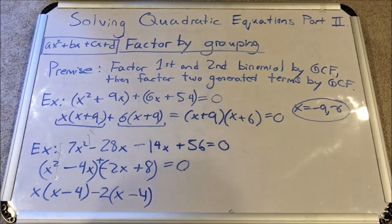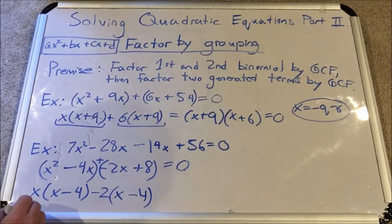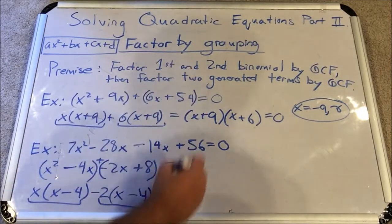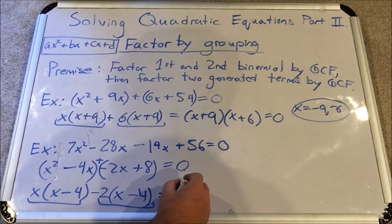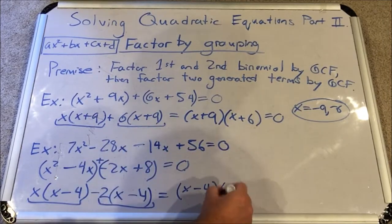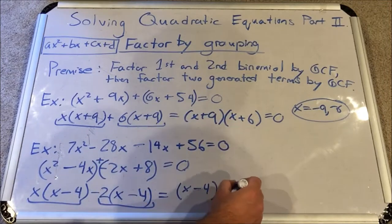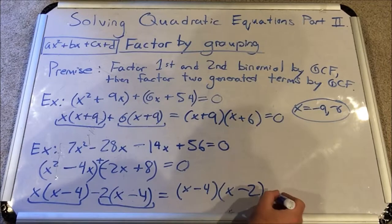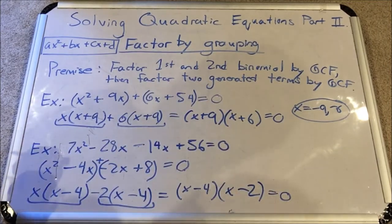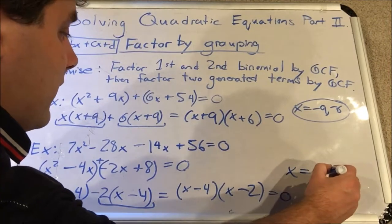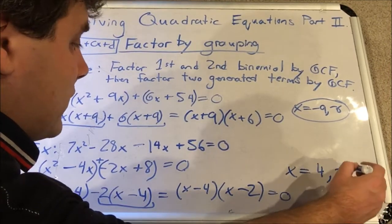So from the second binomial I get −2(x − 4). Now I have two terms both sharing the binomial (x − 4) as a factor, so I factor that out to get (x − 4)(x − 2) = 0. By the zero product property I get the two solutions x = 4 and x = 2.